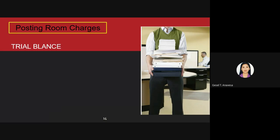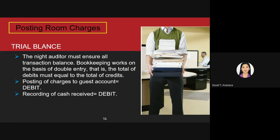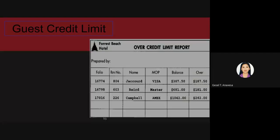For trial balance, the night auditor must ensure all transactions balance. Bookkeeping works on the basis of double entry — the total of debits must equal the total of credits. To obtain a balance for the day, both credit and debit columns must be equal. Posting of charges to a guest account is a debit. Recording all cash received is also a debit. Recording of sales from various departments is a credit.